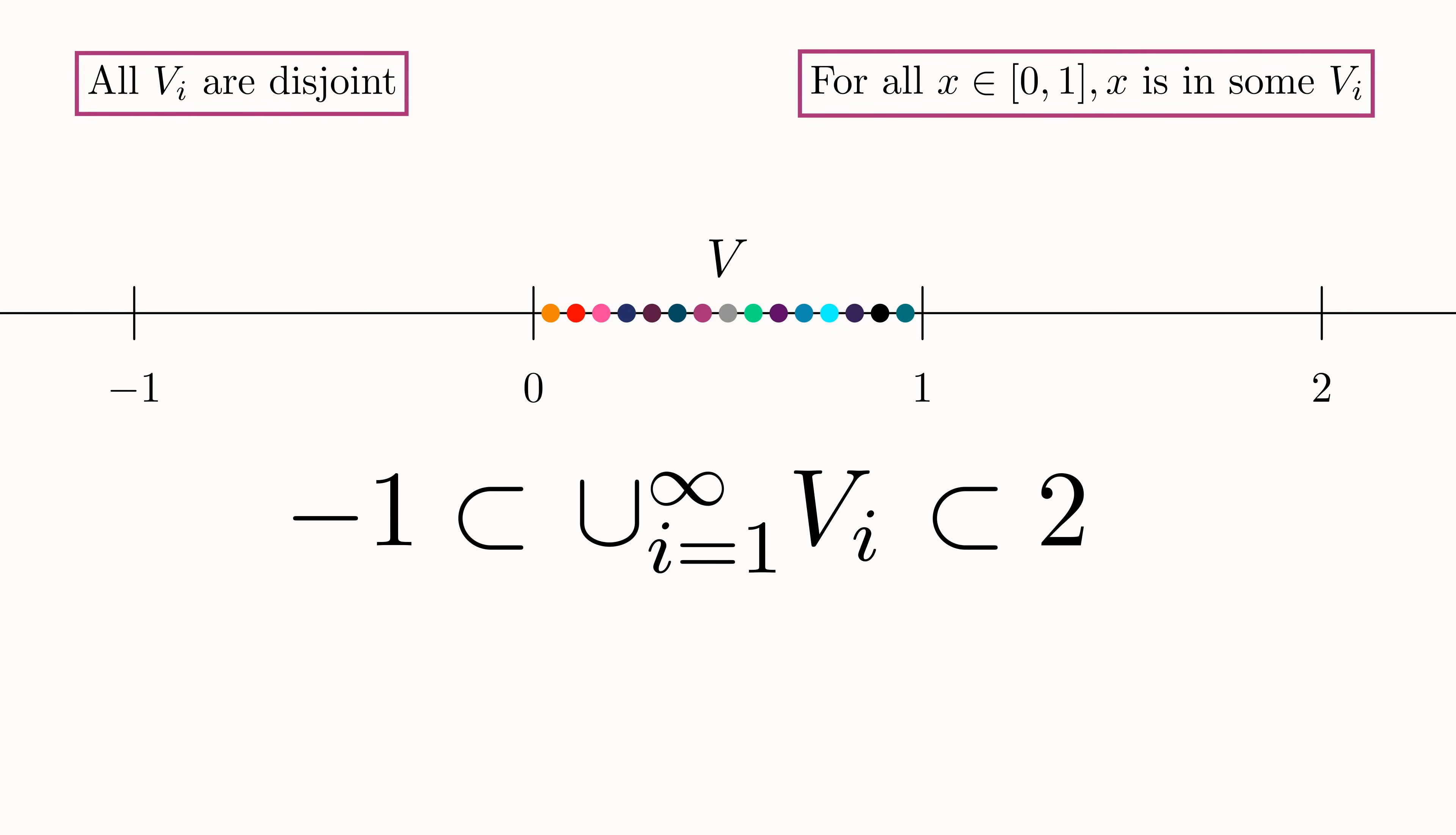And we just showed that any number in the interval zero to one must be in one of the VIs. Okay, so what does this mean? Well, by the countable additivity property, the size of the union is equal to the sum of the sizes of each VI.